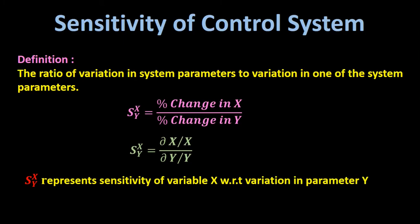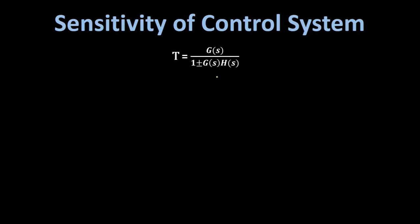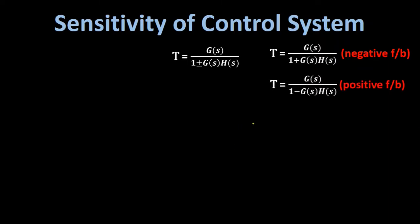S_xy represents the sensitivity of variable x with respect to variation in parameter y. To determine the sensitivity of the control system, we take the overall transfer function of the closed loop control system. For negative feedback, T equals G(s) upon 1 plus G(s)·H(s), and for positive feedback, T equals G(s) upon 1 minus G(s)·H(s). The overall transfer function T is a function of both G and H, which are the parameters.